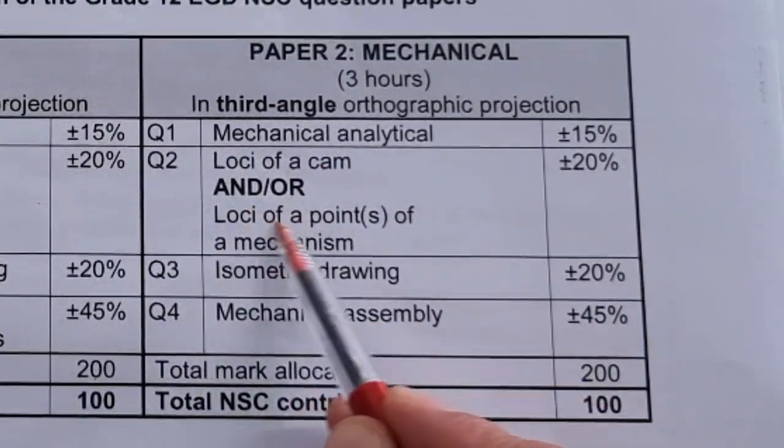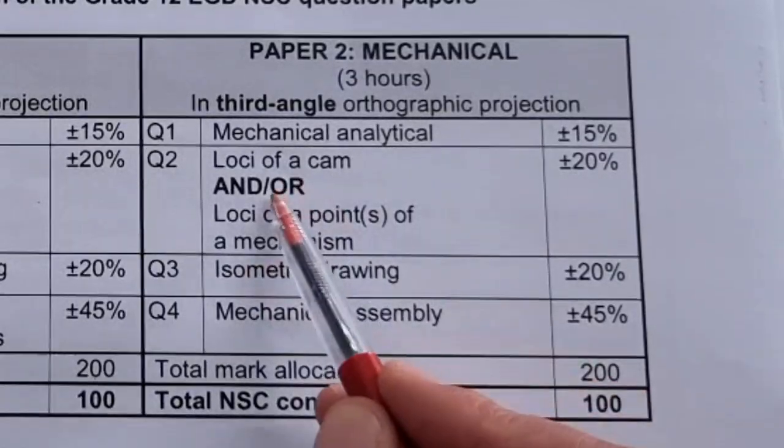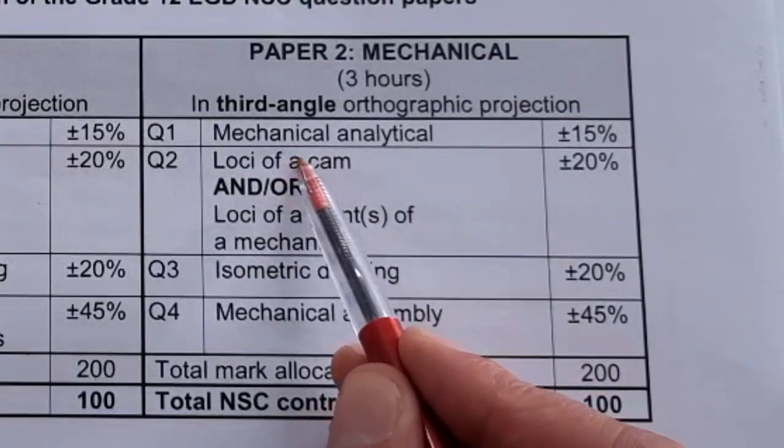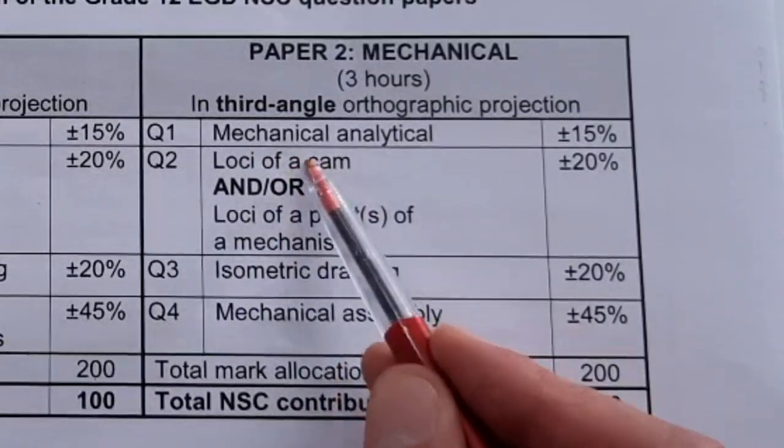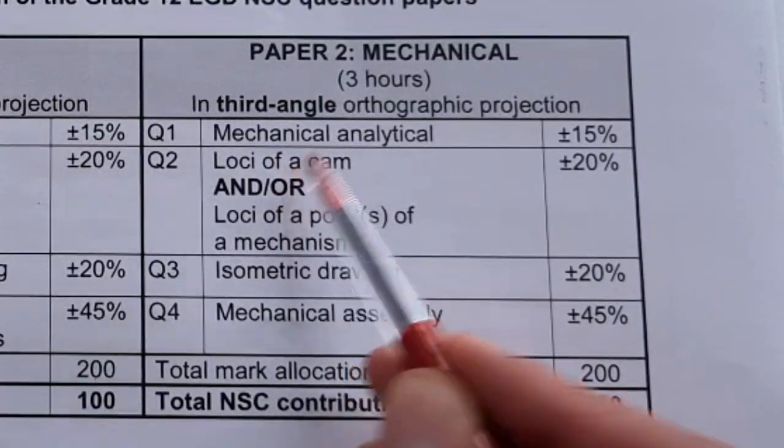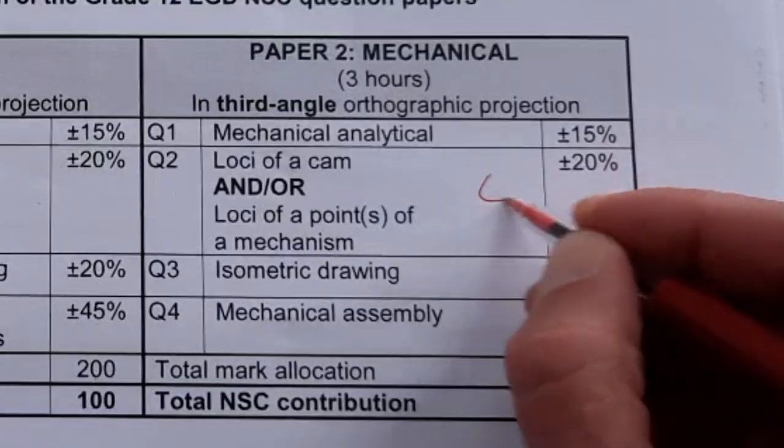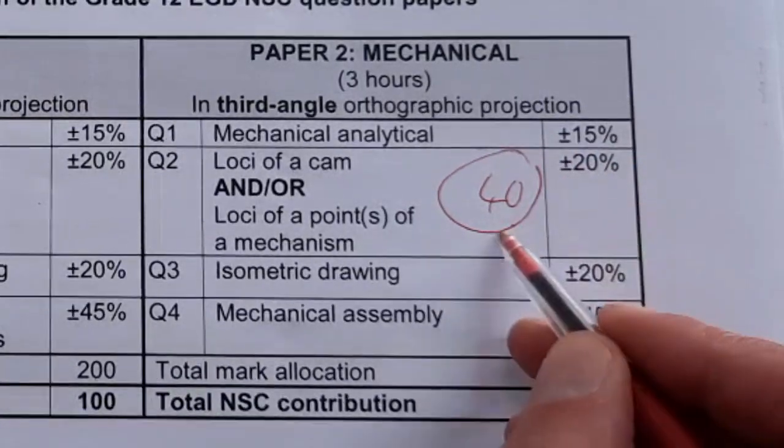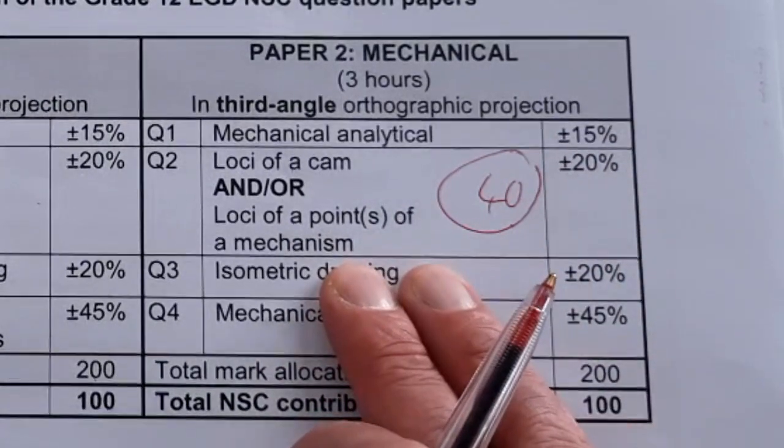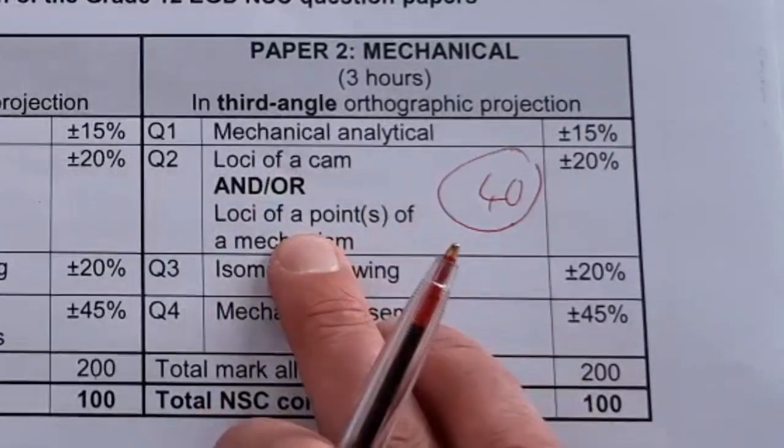You can get one of these, either both of these or just the one or just the other. It's going to be 20% which is roughly about 40 marks in this paper, so a big and important part of this paper. Let's look at what these two will entail.